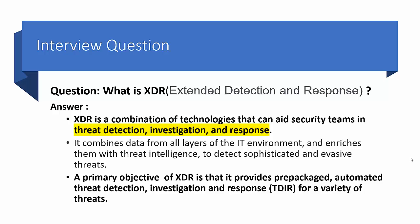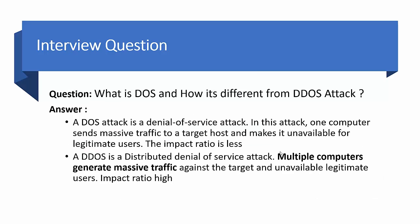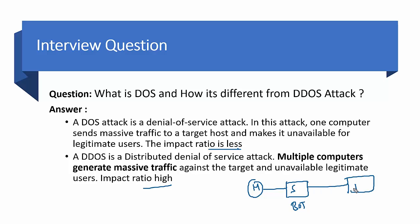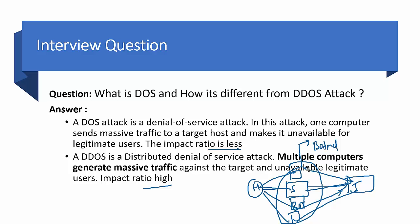The next interview question: what is a DoS attack and how is it different from a DDoS attack? A DoS (Denial of Service) attack is where one computer sends massive traffic to a target host, making it unavailable for legitimate users — the impact ratio is lower. A DDoS (Distributed Denial of Service) attack is where multiple computers generate massive traffic against a target, making it unavailable — the impact ratio is higher. A hacker compromises one system (called a bot) and launches an attack — that's DoS. Compromising multiple machines creates a botnet, and launching from that is DDoS.